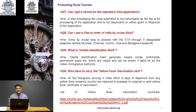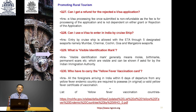Can I use E-Visa to enter India by cruise ship? Yes — entry by cruise ship is allowed with ETA through five designated seaports: Mumbai, Chennai, Kochi, Goa and Mangalore. Visible identification mark generally means moles, birthmarks, scars, etc., which are visible and may be asked for by Indian immigration authorities. All foreigners arriving in India within six days of departure from any yellow fever endemic country are required to carry an original valid yellow fever certificate of vaccination. For COVID, the RT-PCR test is also mandatory — carry the concerned document to submit to Indian immigration authorities.